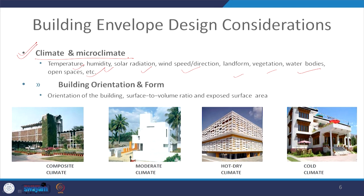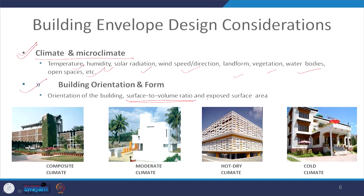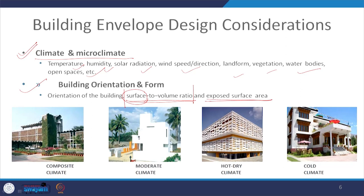Once we have this data from site analysis, the next consideration is building orientation and form. We are talking about two properties: surface-to-volume ratio and exposed surface area. Higher surface area means more surface available for heat exchange through conduction, convection, and radiation. Reducing the surface-to-volume ratio immediately reduces the amount of surface available for heat transfer.